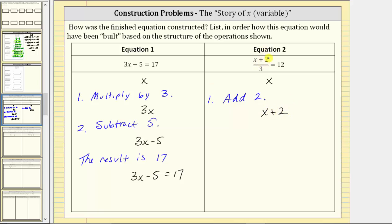And then because we have the quantity (x + 2) / 3, we take this sum and divide by 3. So step two, we divide by 3. This gives us the expression the quantity (x + 2) / 3.